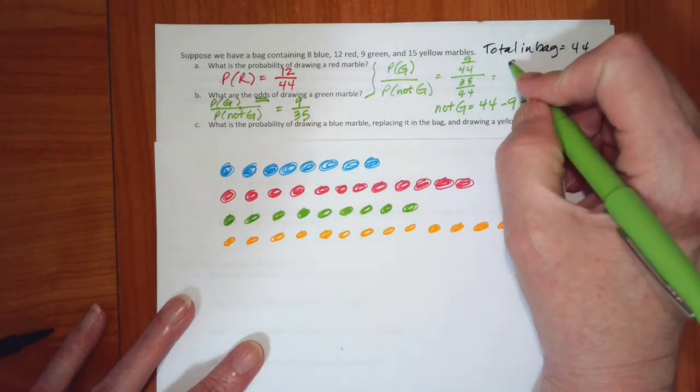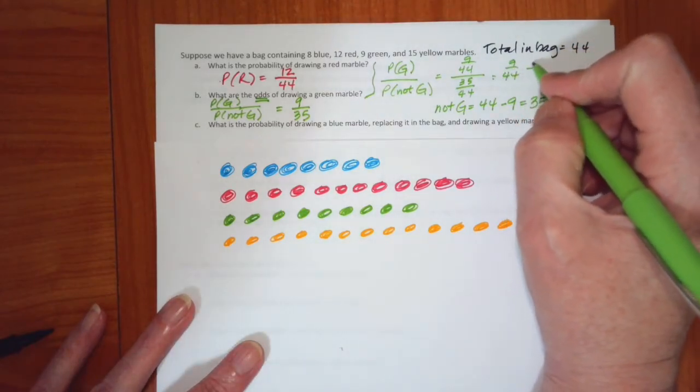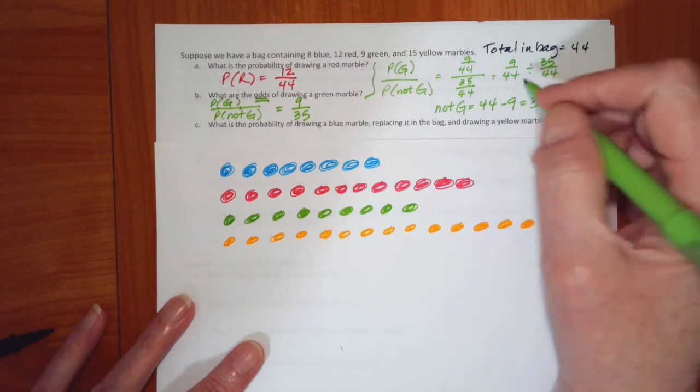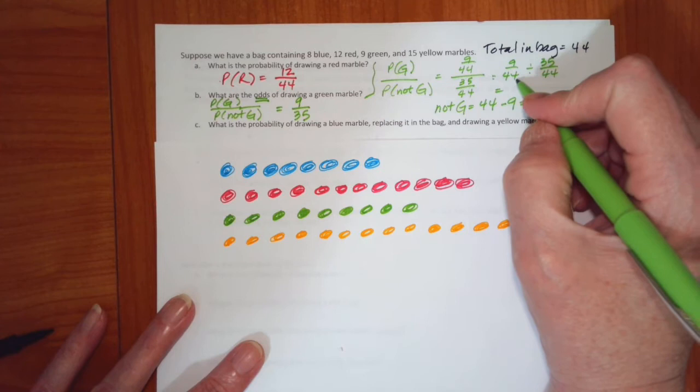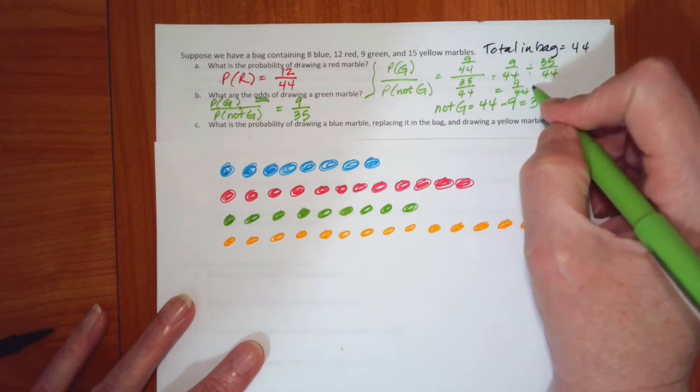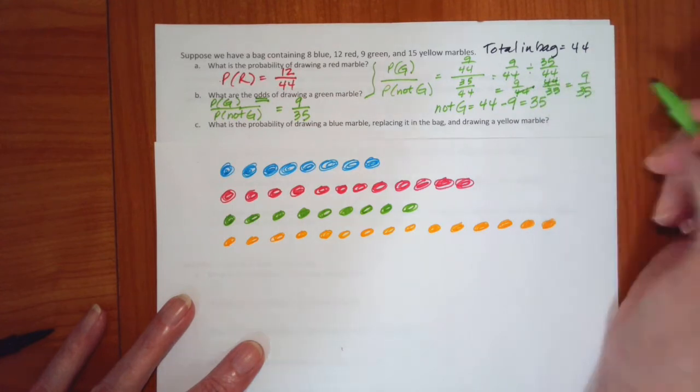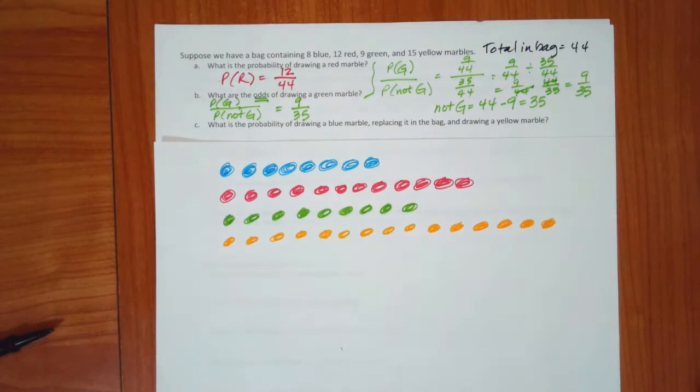I shouldn't have done that. This is 9 over 44 divided by 35 over 44 which is 9 over 44 times 44 over 35 which becomes 9 over 35. So sorry about that. I just kind of jumped to the end on it.